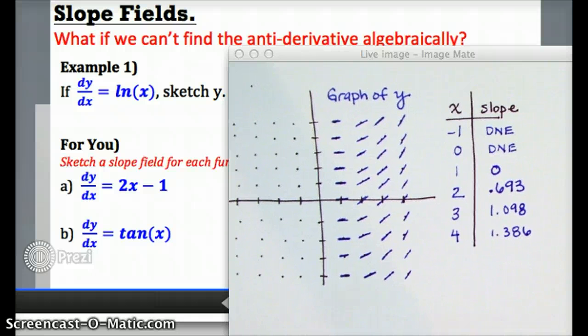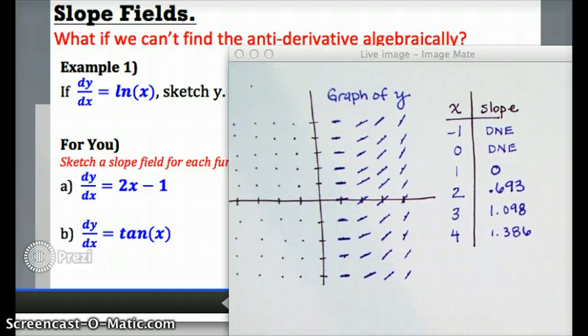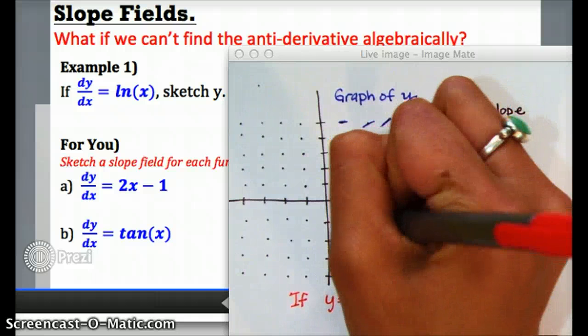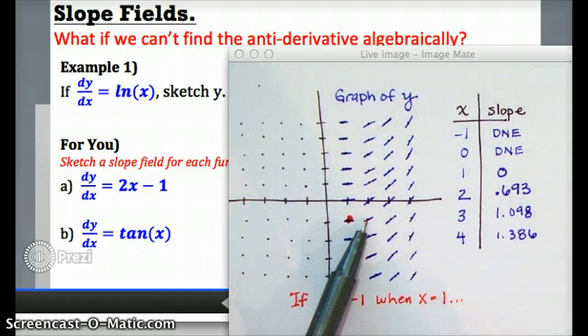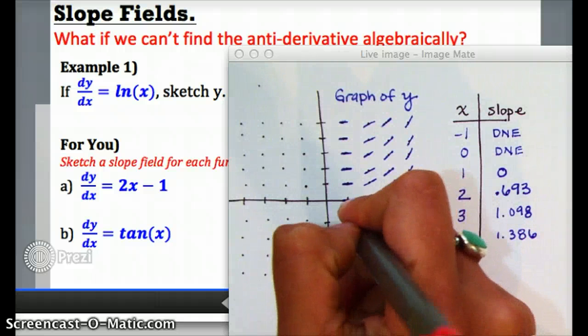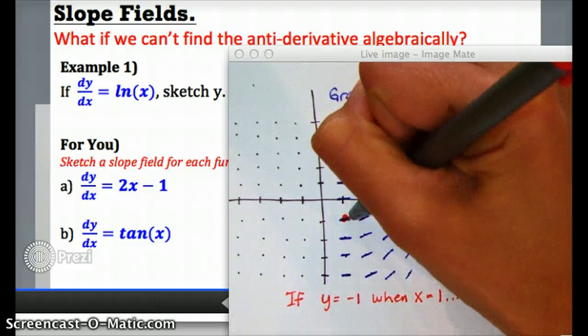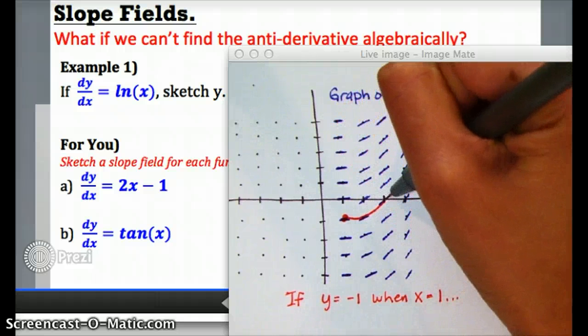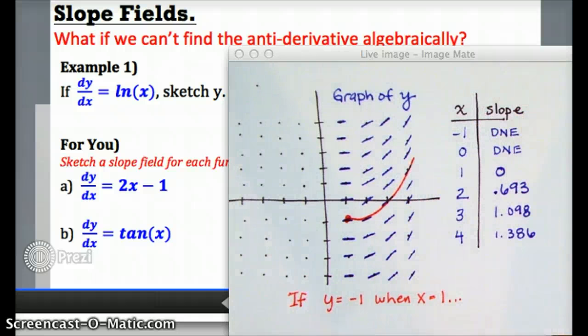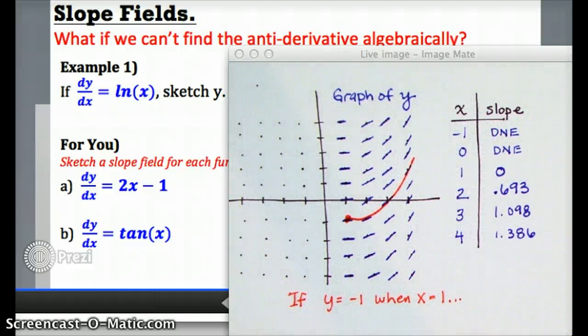And in fact, if I knew a starting point, for example, if somebody told me that y equals negative 1 when x is positive 1, then I could take that starting point at 1 negative 1. And starting from that point, I could just follow the directions of the slope field. So I'd start going sideways, and then I'd kind of turn up when it told me to turn up, and then I'd be a little steeper, and then eventually I'd be steeper. And you can kind of follow the lines to get a possible graph.